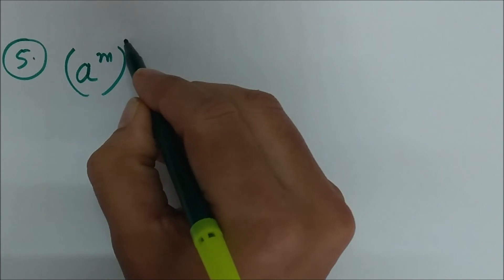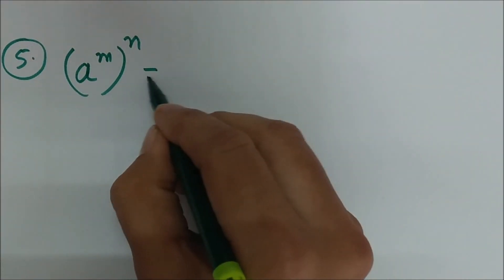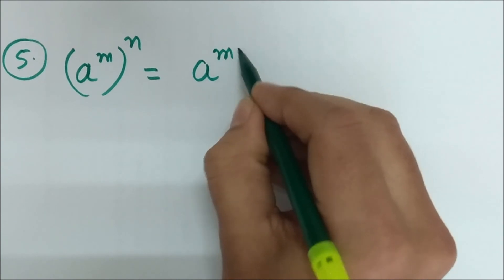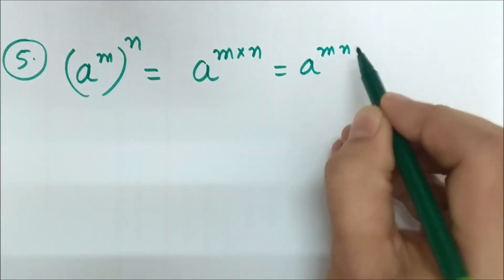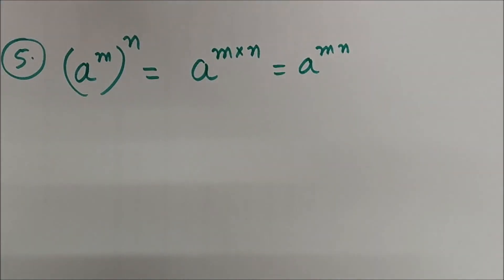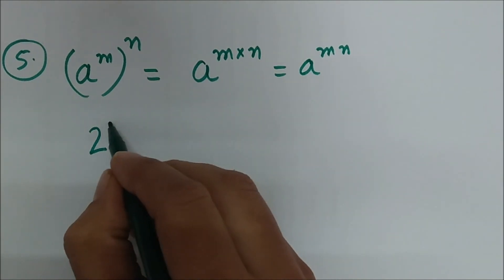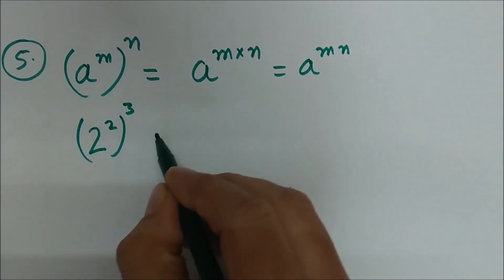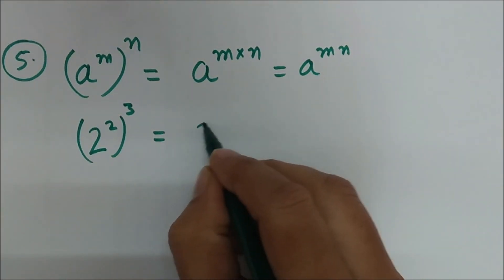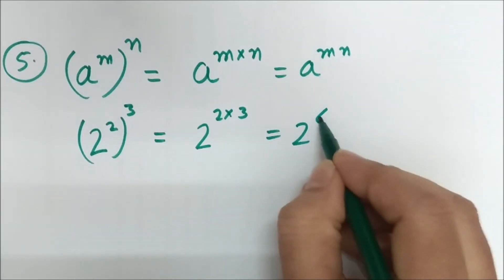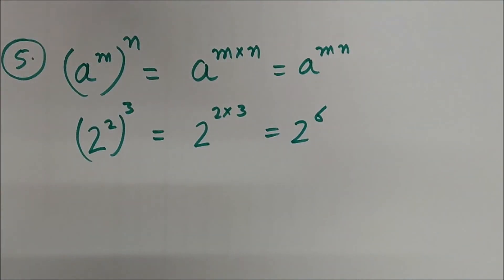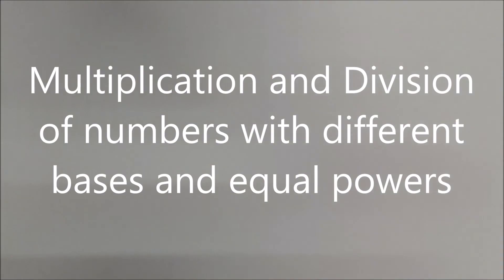Another result: when a power is raised to another power — that is, a raised to the power m, and that is raised to the power n — this simply becomes a raised to the power m times n, or a raised to the power mn. The powers are simply multiplied. For example, 2 squared raised to the power 3 equals 2 raised to the power 2 times 3, which is 2 raised to the power 6.